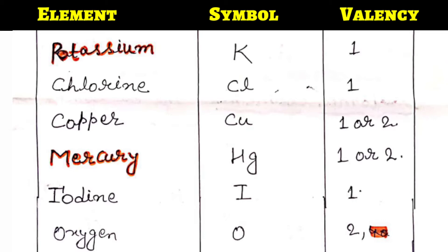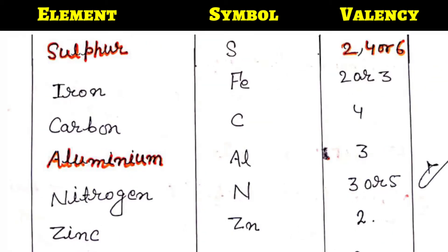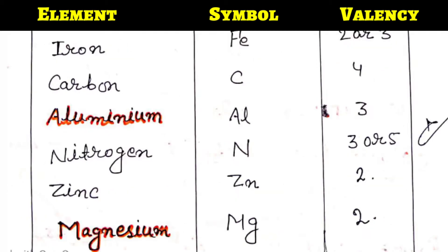In case of oxygen, symbol O, valency 2. Sulfur symbol S — in case of sulfur I have written three valencies: 2, 4, or 6. According to the situation it uses different valencies. In case of iron, symbol Fe, again variable valency 2 or 3. Carbon C, valency 4. Aluminium Al, valency 3. Nitrogen N, variable valency 3 or 5. Zinc symbol Zn, valency 2. Magnesium symbol Mg, valency 2.